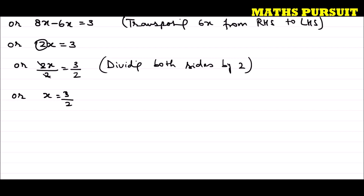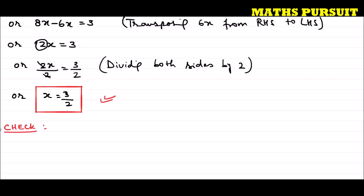We got the value of x equal to 3 upon 2, and this is our answer. But we should always do a cross-check to verify whether x equals 3 by 2 is correct. Let us do a check by rewriting the original equation that the question gave us.